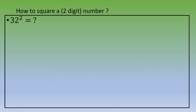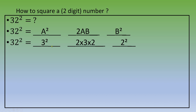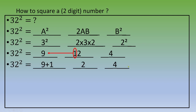Let's calculate 32 squared using the same method: 3² for group 1, 2×3×2 for group 2, and 2² for group 3 — giving 9, 12, and 4. Only group 1 can be two digits, so we modify 12: keep the 2 and carry the 1 to group 1. This gives 9+1, 2, and 4 — so the answer is 1024.